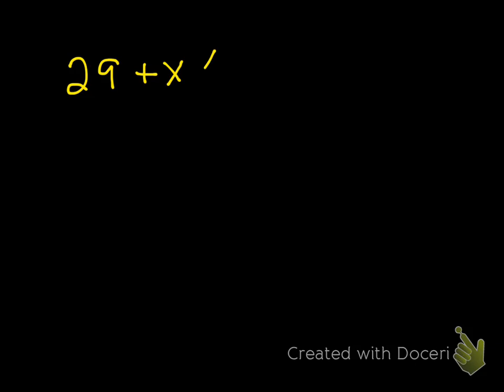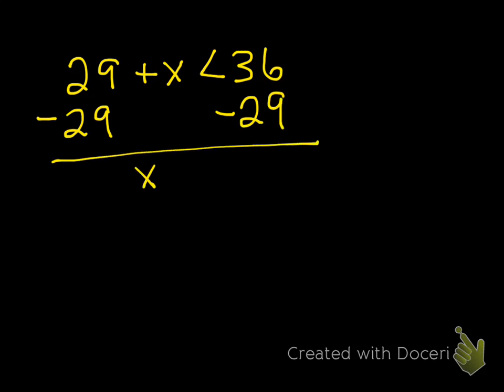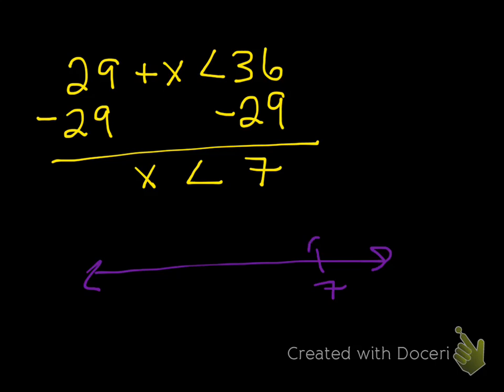Let's move on to the back of the notes. All this is doing is practicing solving inequalities — you just do them exactly like an equation. So 29 plus x is less than 36; subtract 29 from both sides. That gives you x is less than 7. If you're going to graph that, here's your line — here's my 7 — and since it's less than 7 it's going to be an open circle, going that way to the left.